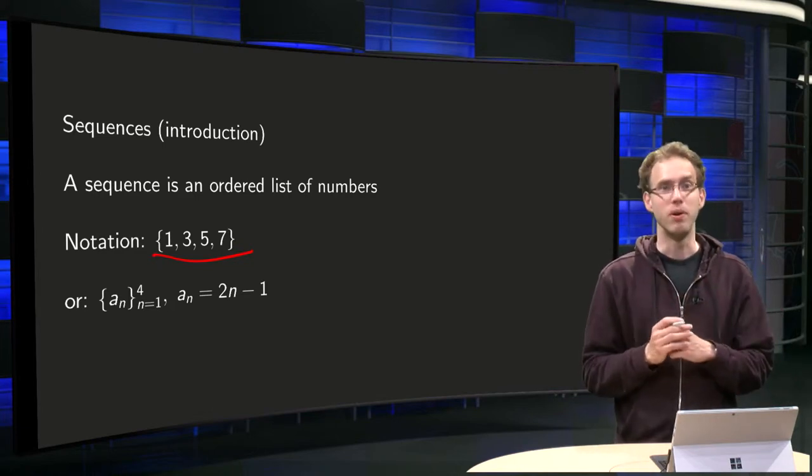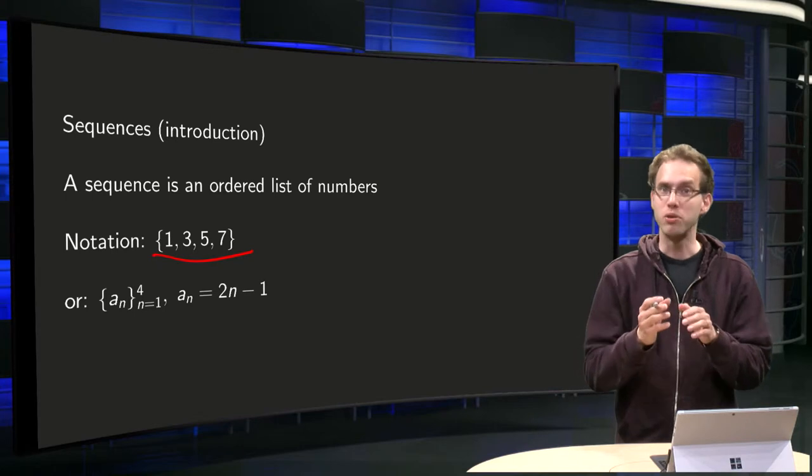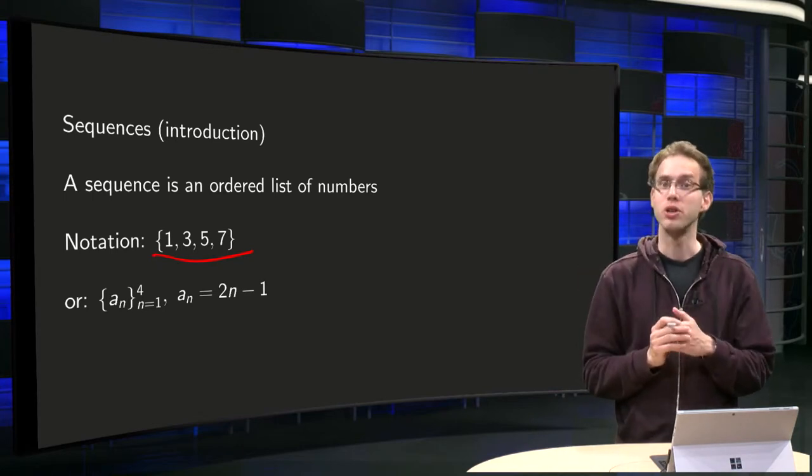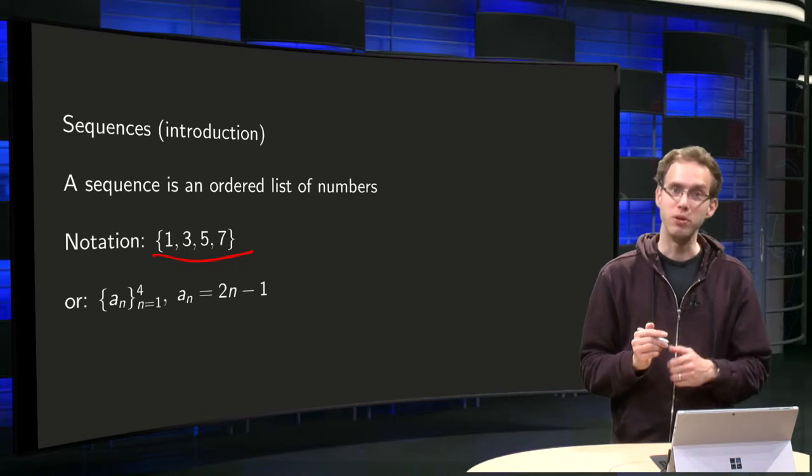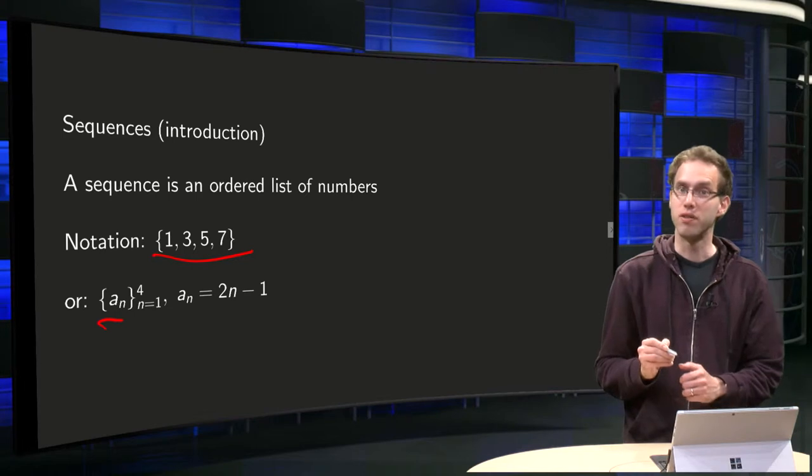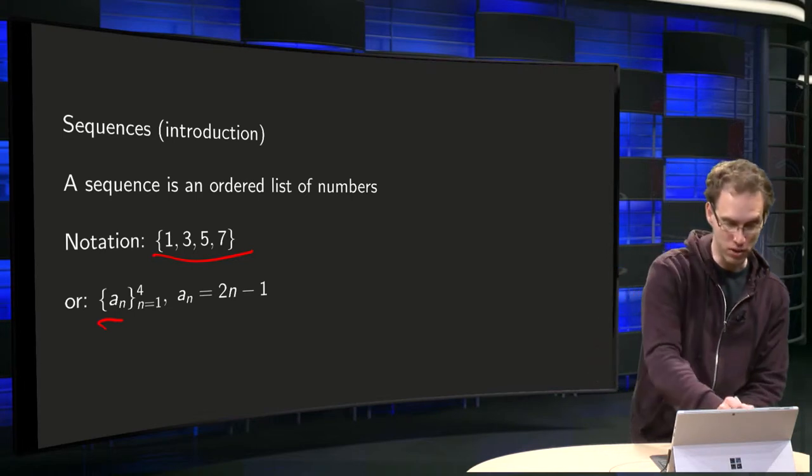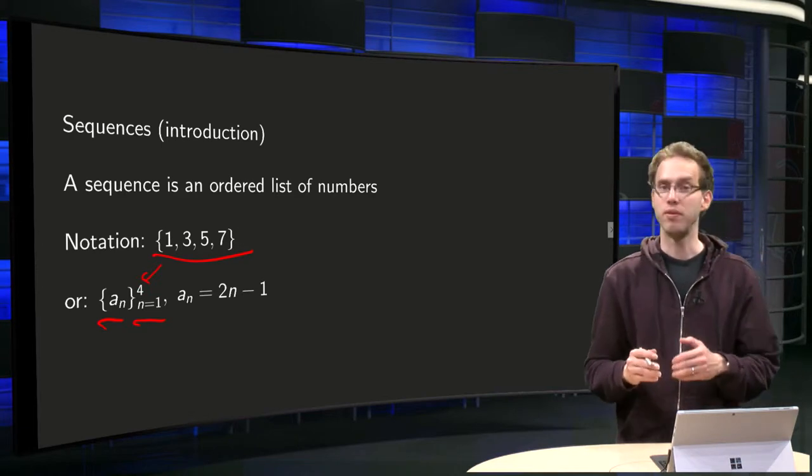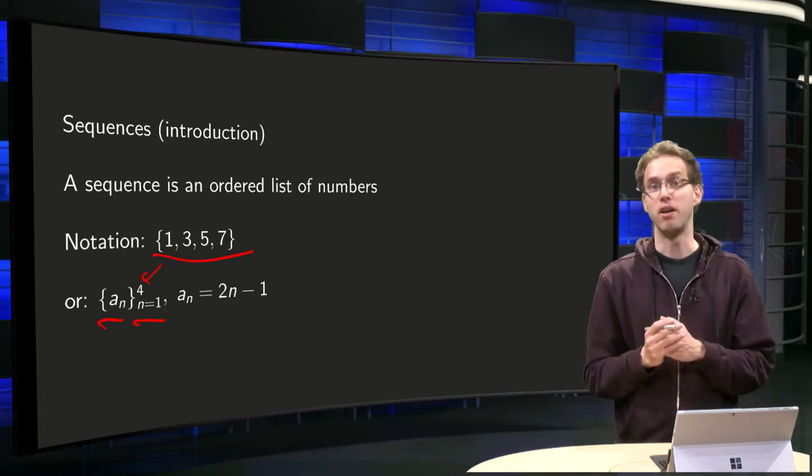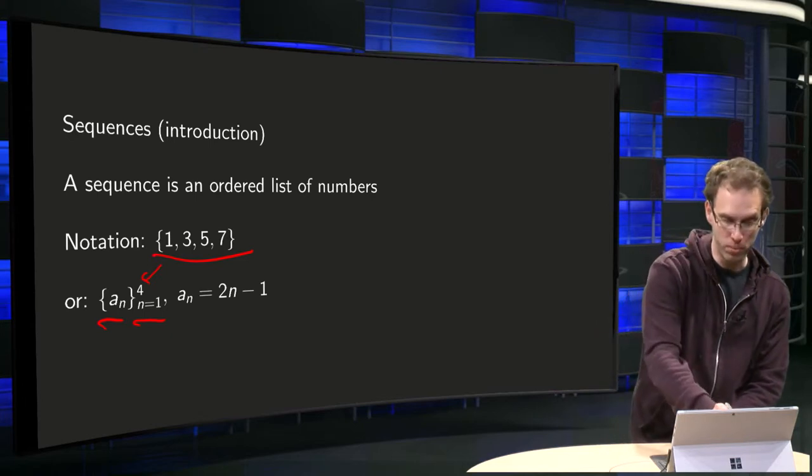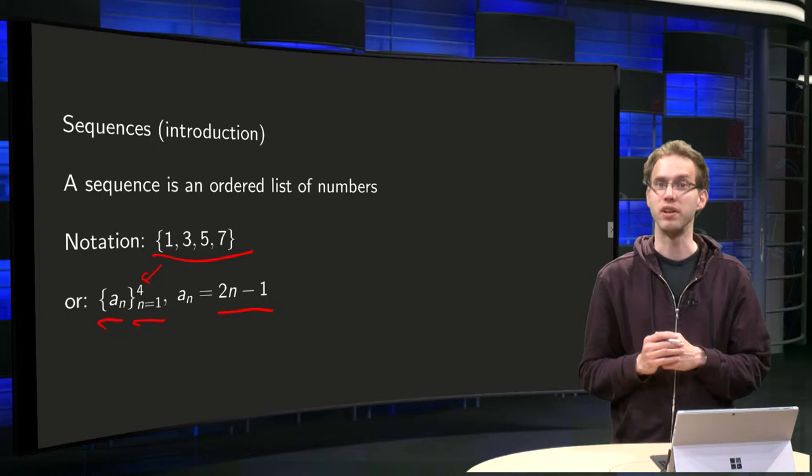Usually, notation where we write down all elements of the sequence is a bit impractical. So what do we do instead? We use an over here. We say the sequence has 4 elements, so we go from n equals 1 to n equals 4. And then we give a formula for every element, and if we want the odd numbers, we can have a_n equals 2n minus 1.